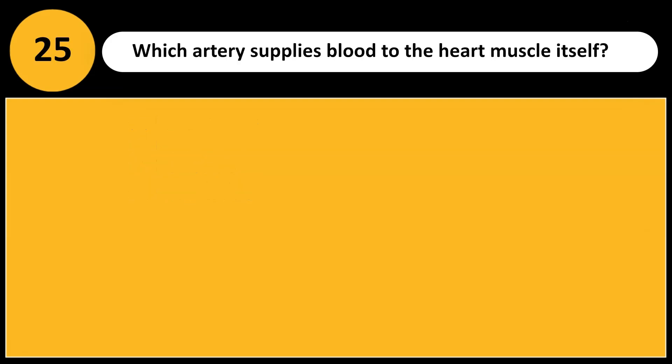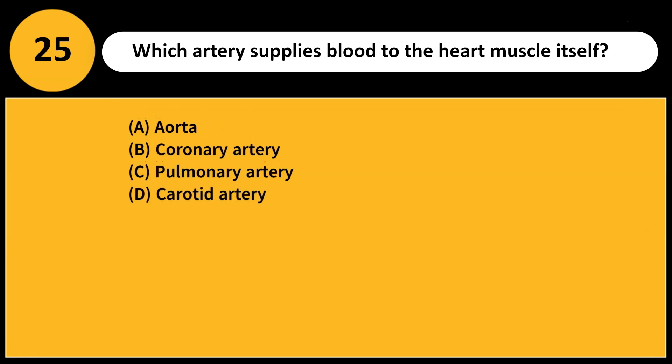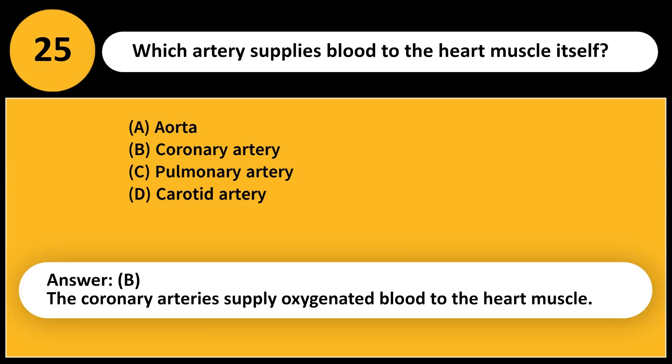Which artery supplies blood to the heart muscle itself? A. Aorta. B. Coronary artery. C. Pulmonary artery. D. Carotid artery. Answer: B. The coronary arteries supply oxygenated blood to the heart muscle.